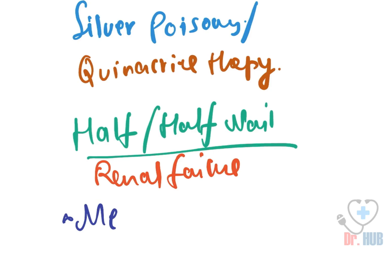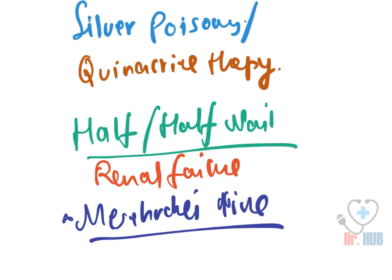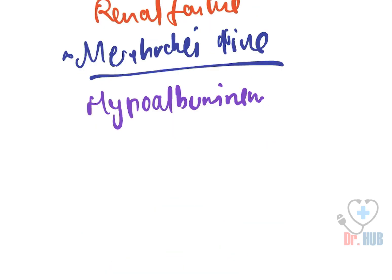Next we look at Muehrcke's lines. Muehrcke's lines are very specific to hypoalbuminemia.